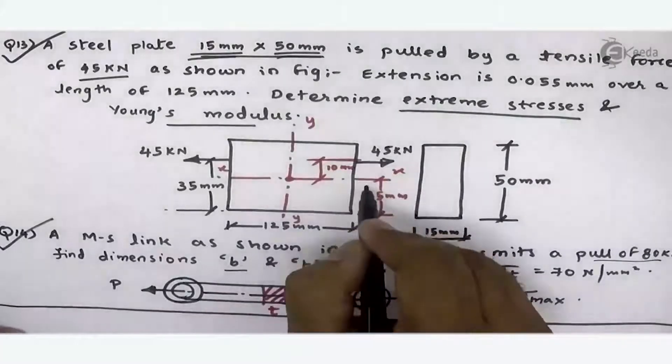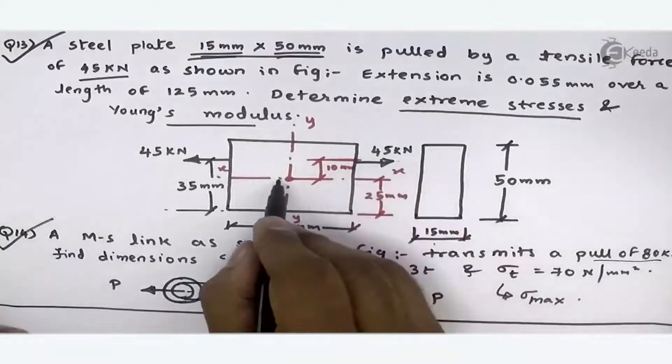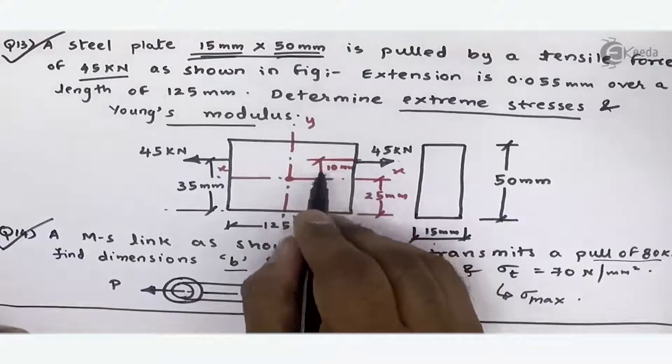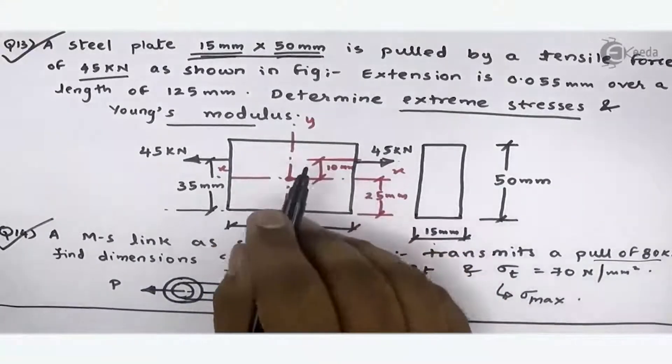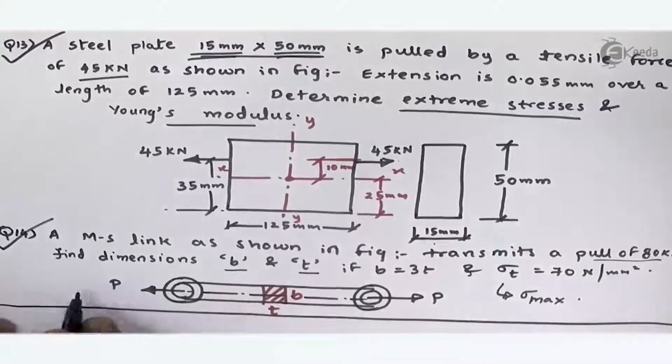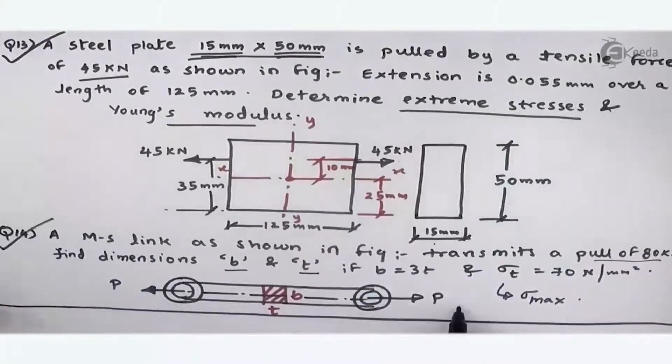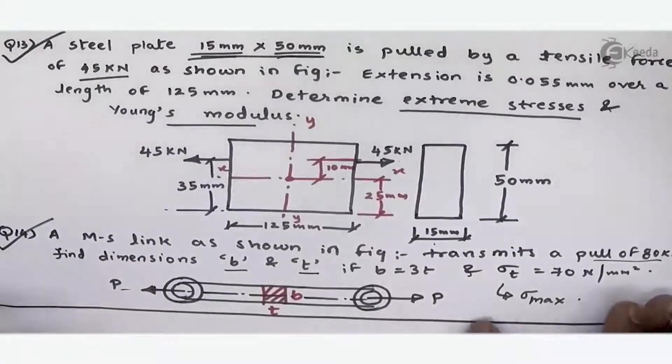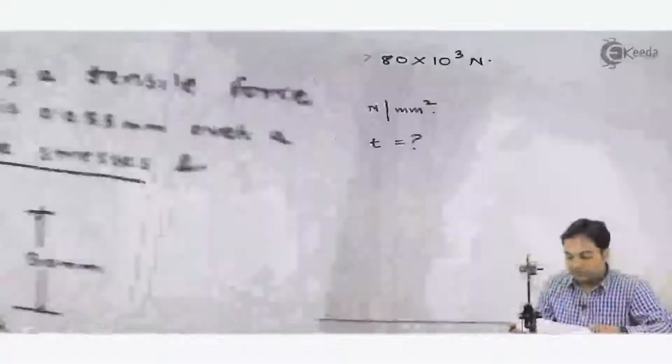If you compare this with the previous problem, in that load and axis—there's distance between them, means eccentricity is there in question number 13. But in question number 14, eccentricity is nothing. Load is just passing through the axis, so there will be direct stress.